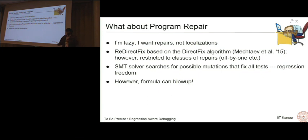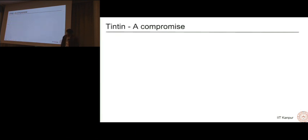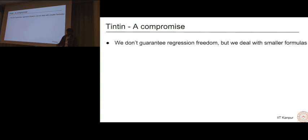What we thought was why not use regression awareness in this setting? With Tintin, we make a compromise. We do not guarantee regression freedom, but we deal with smaller formulas and potentially faster solving times. So now repairs that we generate are not guaranteed to be okay for all the passing tests, but we augment it with the regression score and if that score is low, we hope that it fixes all the passing tests as well as the failing test. This is what we hope.